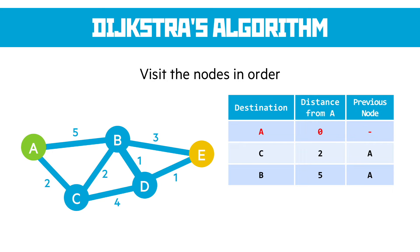Moving on to C — we investigate that first. From C we can go to A, but that's going back on ourselves. We can go to B, which has a shorter distance of 4 from A, so we update that. We can also go to D, which has a distance of 6 from A — further away than B, so it goes further down the list. We've updated B because it was a shorter path in this direction. C is now complete, so we mark it as done and move on to our next closest node, which is B.